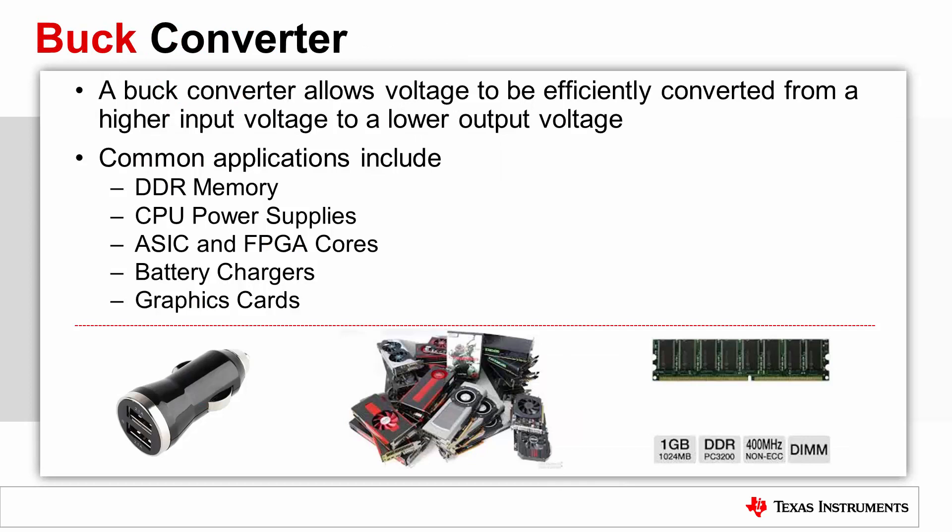The first switch mode power supply topology to investigate is the buck converter. As previously described, the buck converter allows a DC input voltage to be efficiently converted to a lower output voltage. Common applications for a buck converter include power for DDR memory banks, CPU power supplies, ASICs and FPGAs, and servers. Laptops also contain battery chargers and graphics cards where buck converters are commonly used.